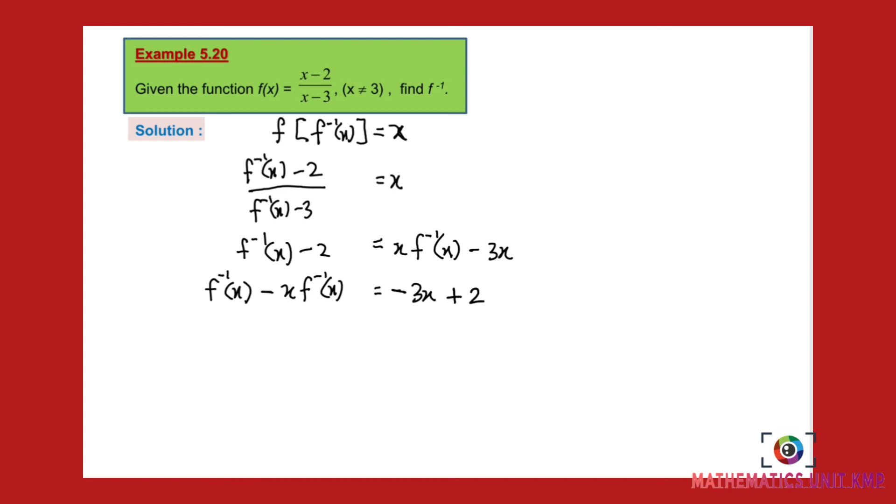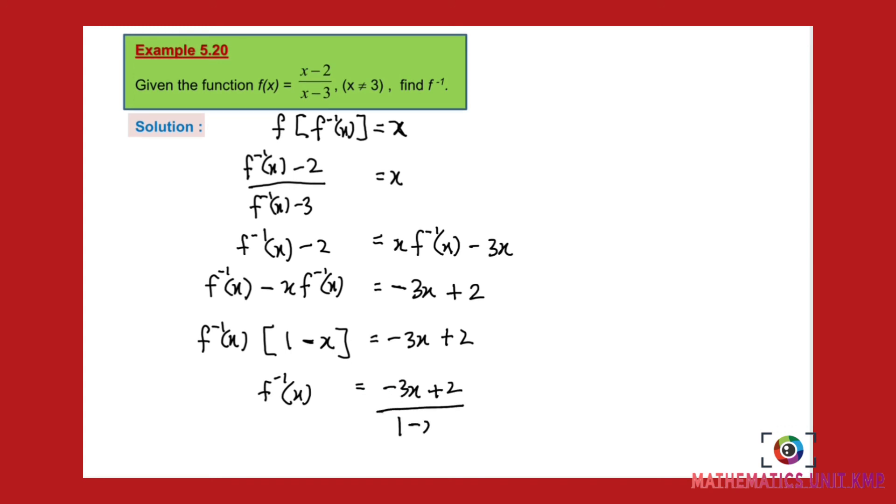Now you can factorize f inverse as one object, and then the rest remains the same. Okay, lastly you can get f inverse x equals negative 3x plus 2 over the whole thing. Simple as that. Do you understand again?